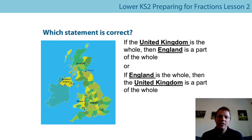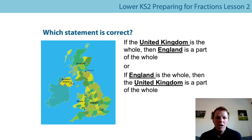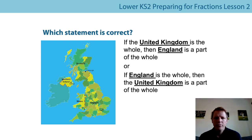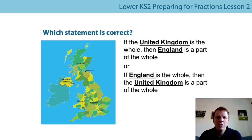Another one we looked at — same image. Which statement is correct? If the United Kingdom is the whole, then England is a part of the whole — or if England is the whole, then the United Kingdom is part of the whole? Hopefully you said the top one is correct. If the United Kingdom is the whole, that's what this map is of, and England is a part of the whole.